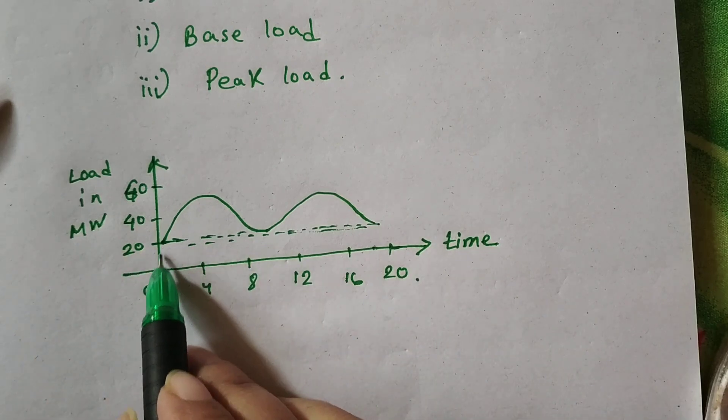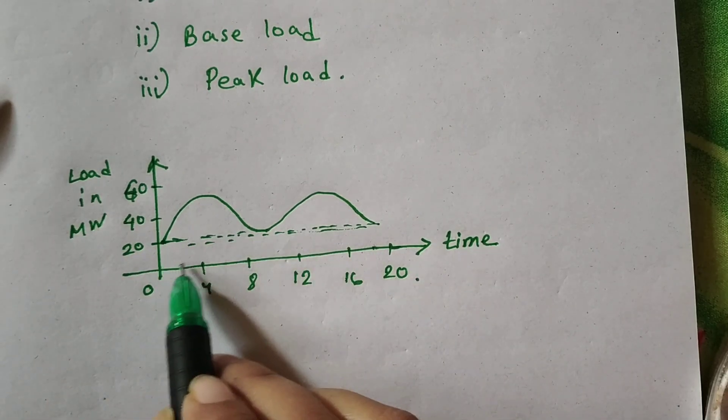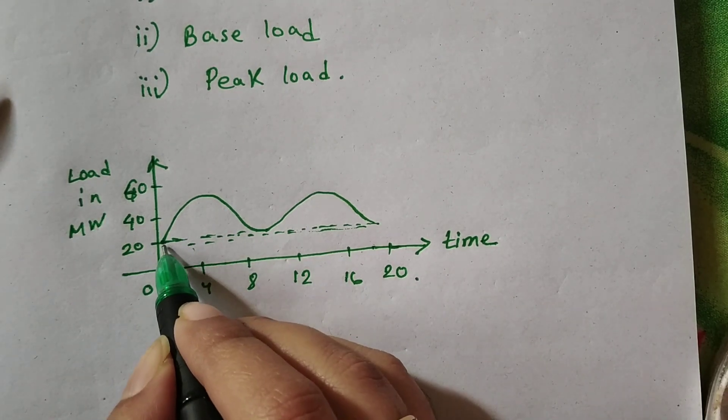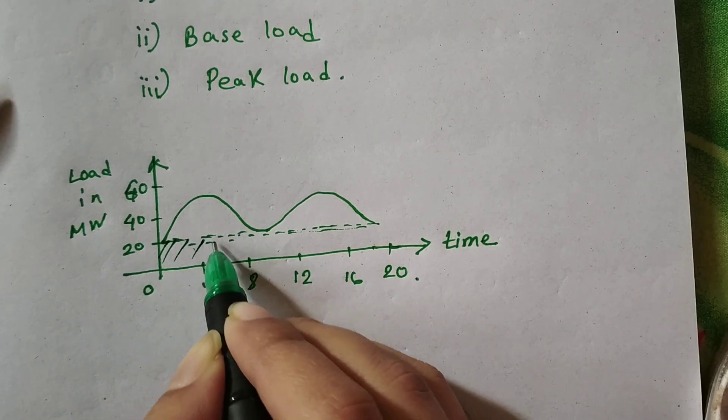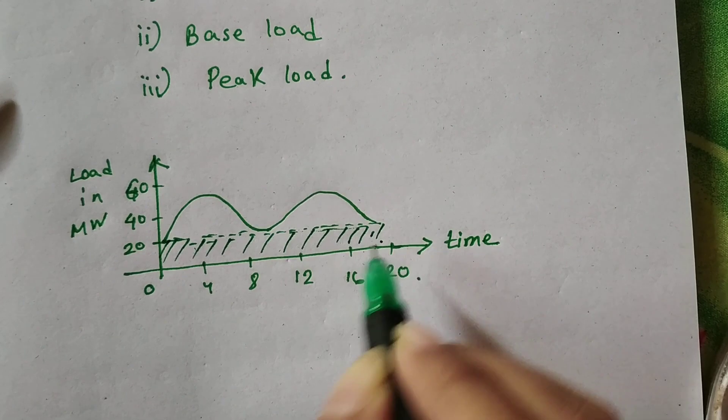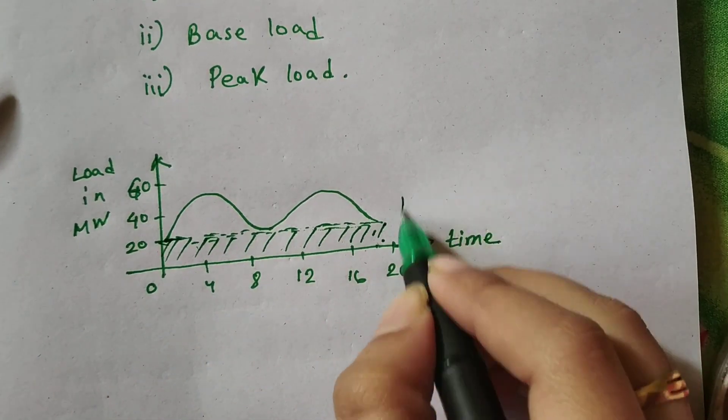That means in this square area, the load is constant or you can say fixed. So I draw hash here. And this area is called base load.